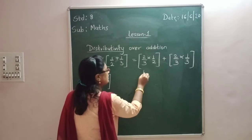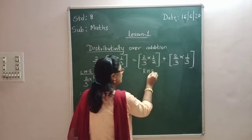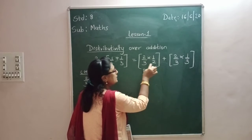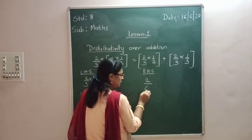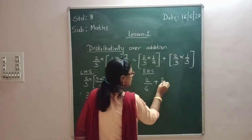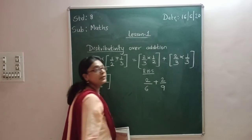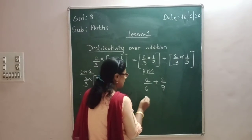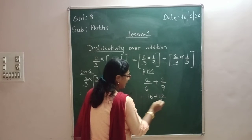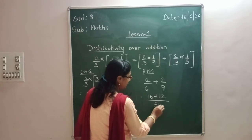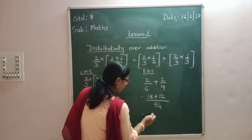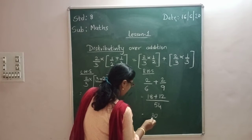Now let me solve the RHS and verify whether both are the same. This is 2/3 multiplied by 1/2, plus 2/3 multiplied by 1/3. So the first term gives 2/6, and the second term gives 2/9. Now I find a common denominator: 9 times 2 is 18, plus 6 times 2 is 12, giving 4 — that is 18 plus 12 equals 30, over 54.